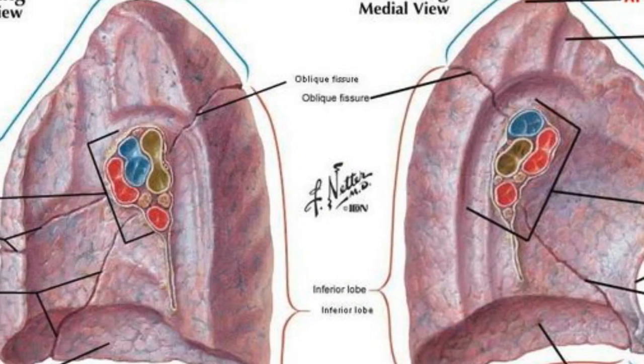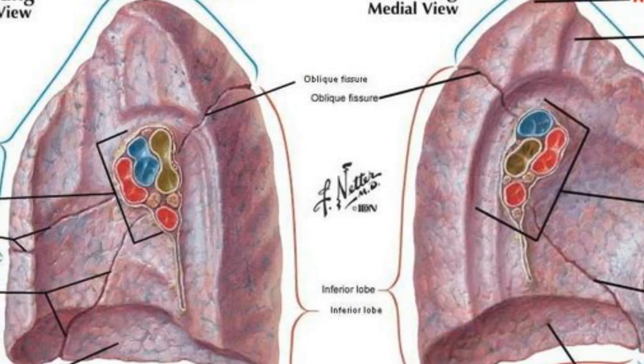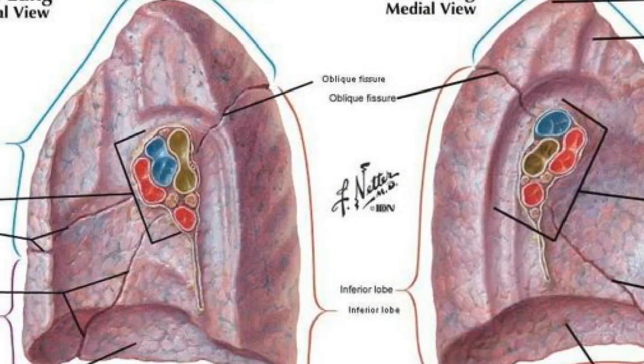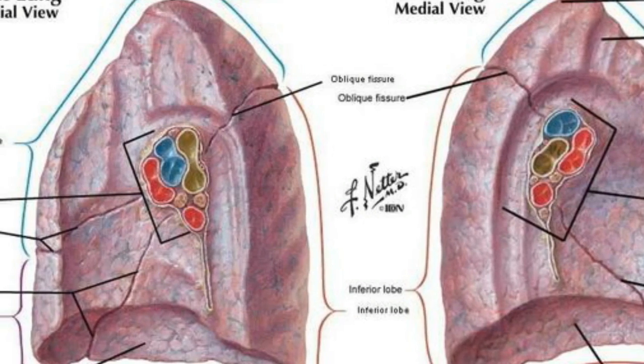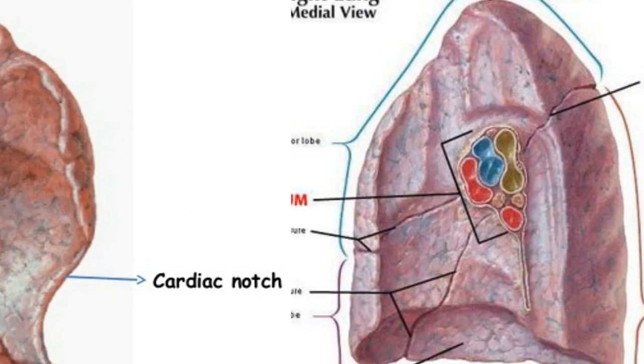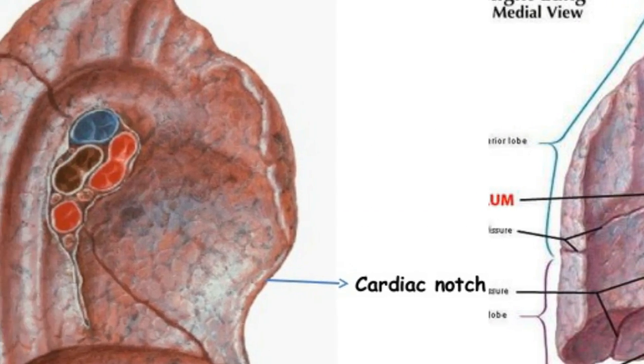Each lung can be divided into four main sections: the apex, base, root, and the hilar region or hilum of the lung.